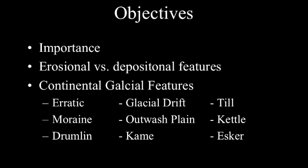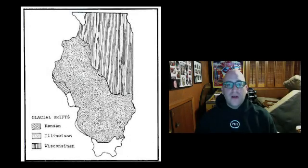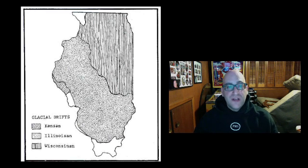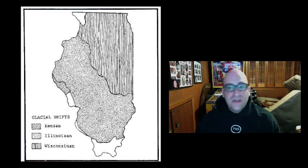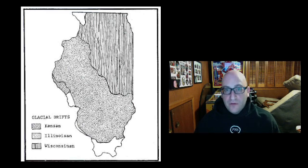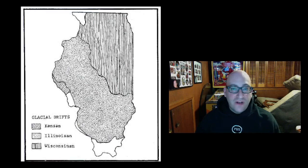Let's get into it. As always, if you have any questions please feel free to send me an email. All right, why are we talking about continental glaciers? Take a look at this diagram of Illinois — it shows three different periods of glaciation over the last few tens of thousands of years, showing that our entire state was once covered by a continental glacier.